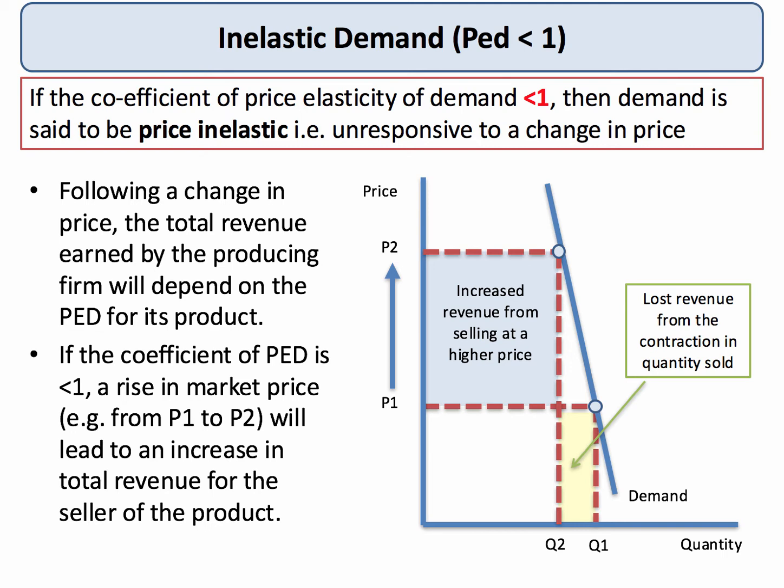The total revenue earned by the firm depends on the price elasticity of demand following a price change. If the coefficient of elasticity is less than 1 — in other words if demand is inelastic — an increase in the market price, shown here as a price rise from P1 to P2, will cause quantity sold to contract from Q1 to Q2. But notice that the fall in quantity from Q1 to Q2 is significantly less in terms of revenue than the increase in the unit price. So the lost revenue from a contraction of quantity sold, shown in yellow, is less than the increase in revenue from selling at a much higher price. The blue area is greater than the yellow area, therefore total revenue will go up.